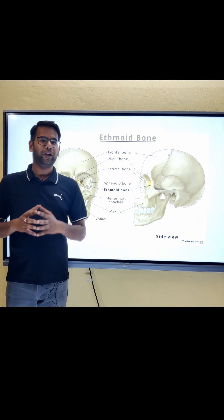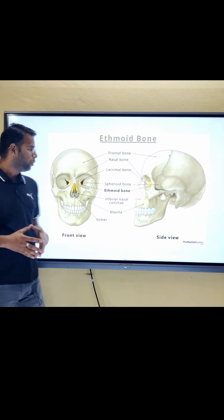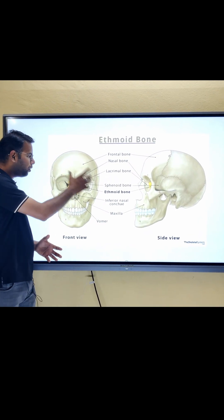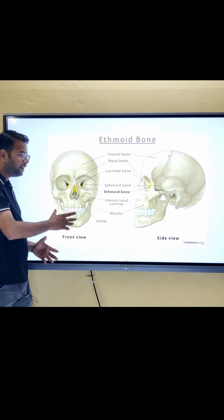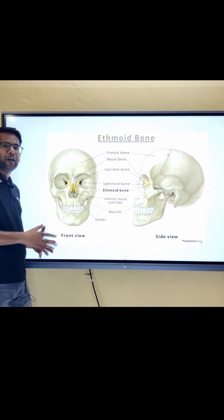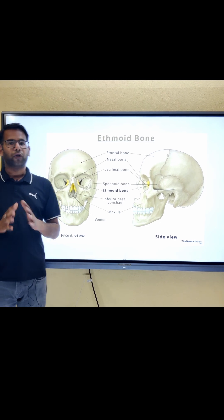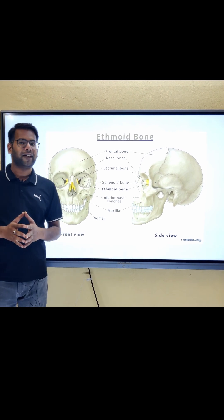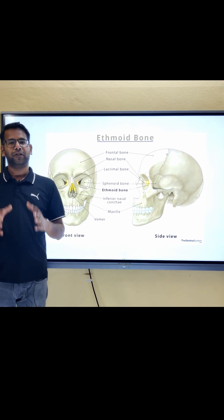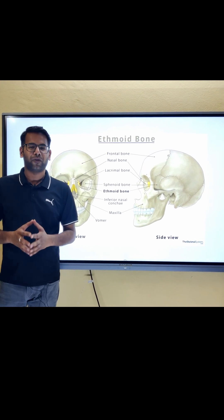Option three: ethmoid bone. It forms part of the nasal cavity and the orbit, but again there is no connection with the tendon here. So this option is also not correct.